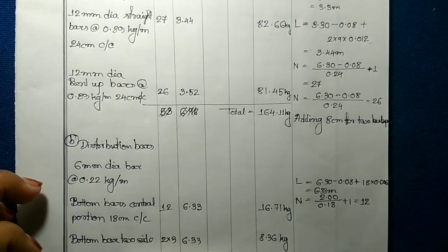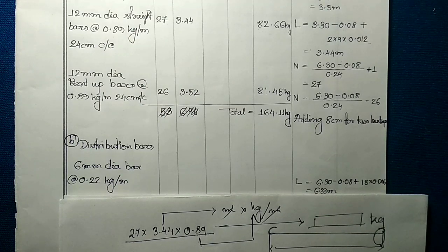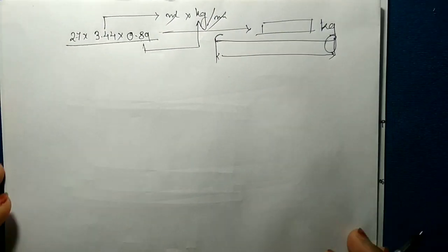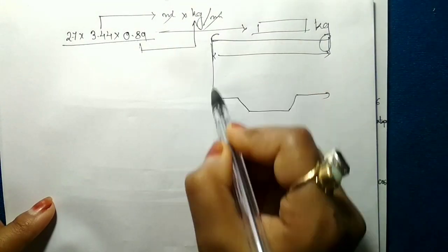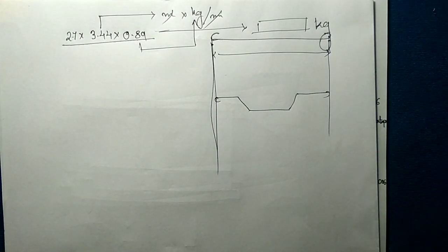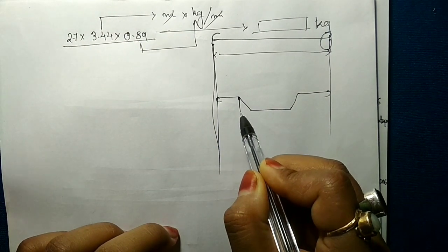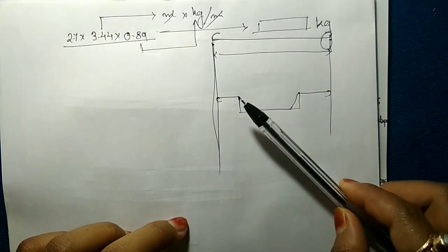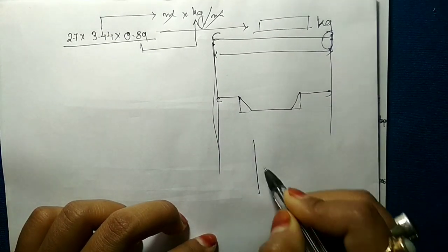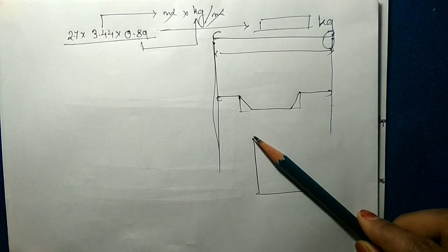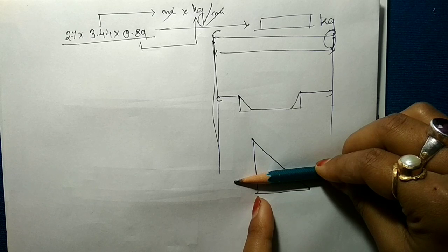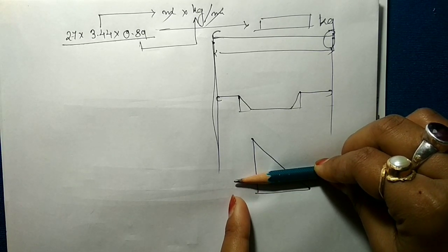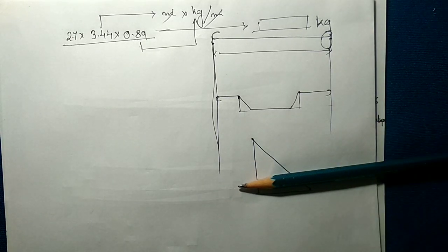For bent up bars, we need to add one additional length to the length of the straight bar. The straight bar is flat, but the bent up bar has an inclined portion. If we drop this inclined side down to the base, the inclined length is slightly greater than the base. This additional amount needs to be added to the straight bar length.